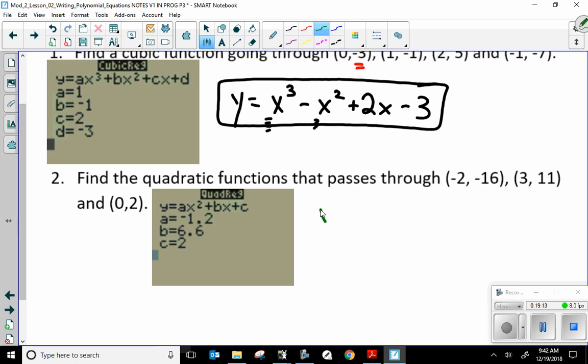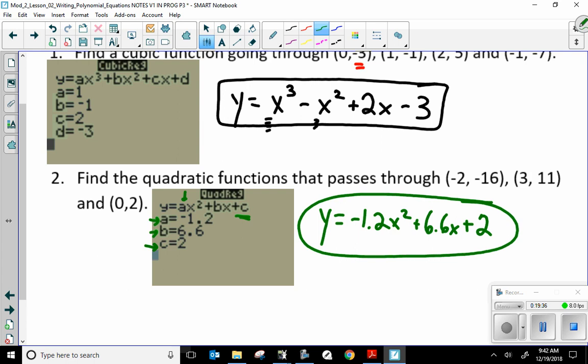So, here we go. Y equals my A, which is negative 1.2, because that's my A, times X squared. Plus B, times X. My B is 6.6. Plus C, which is 2. There you go.